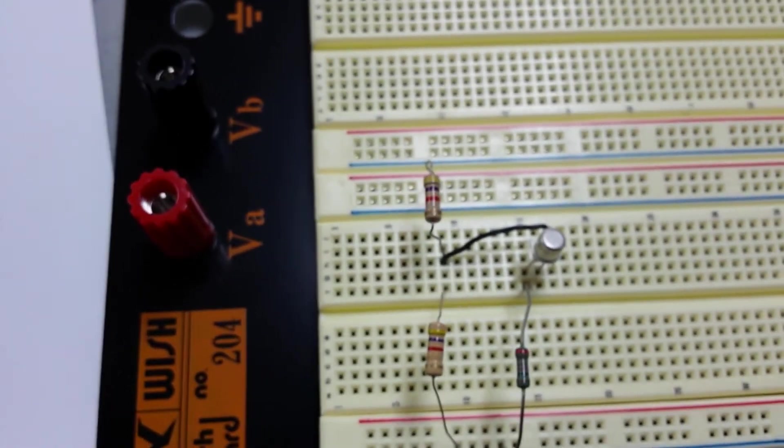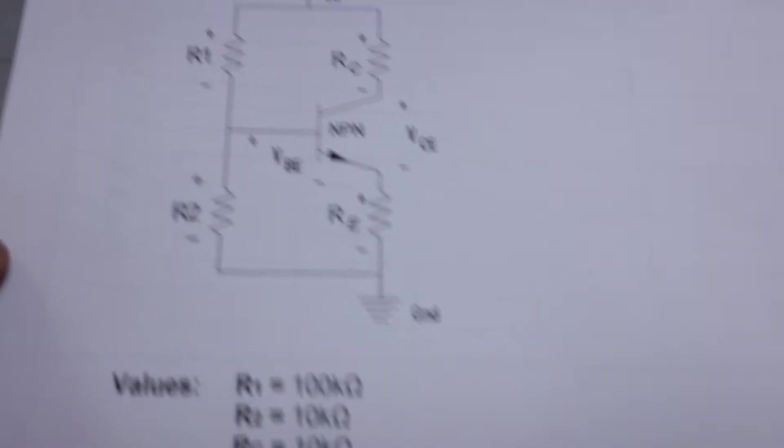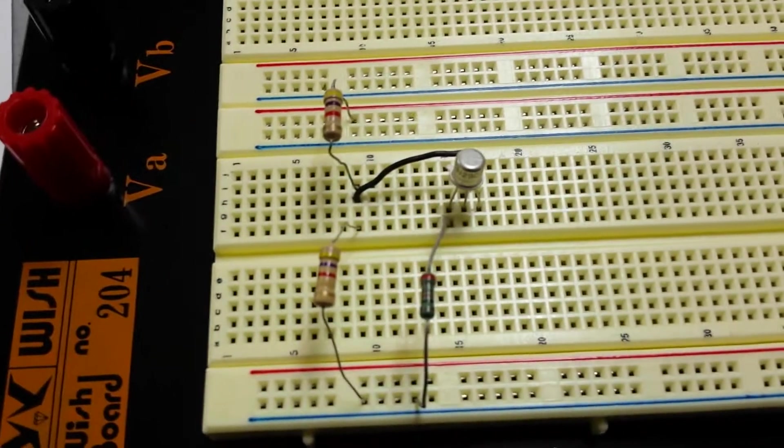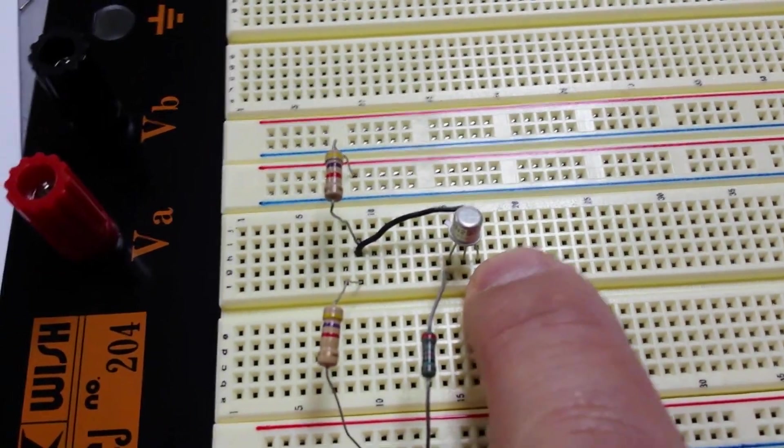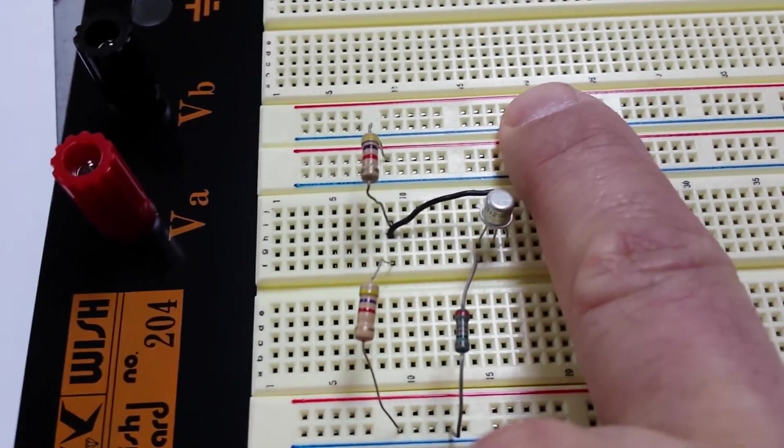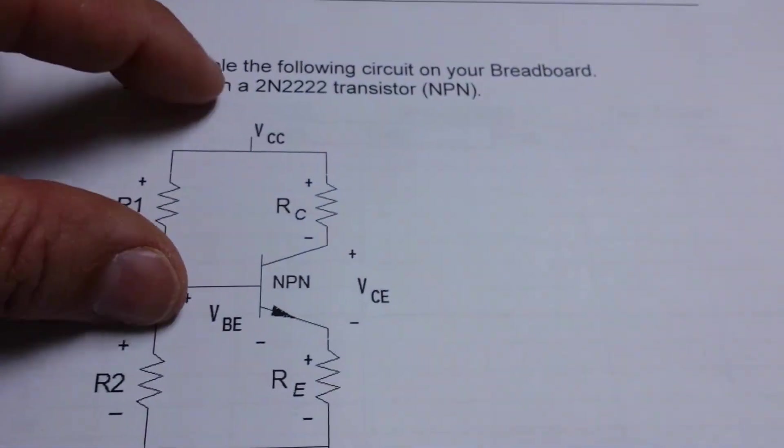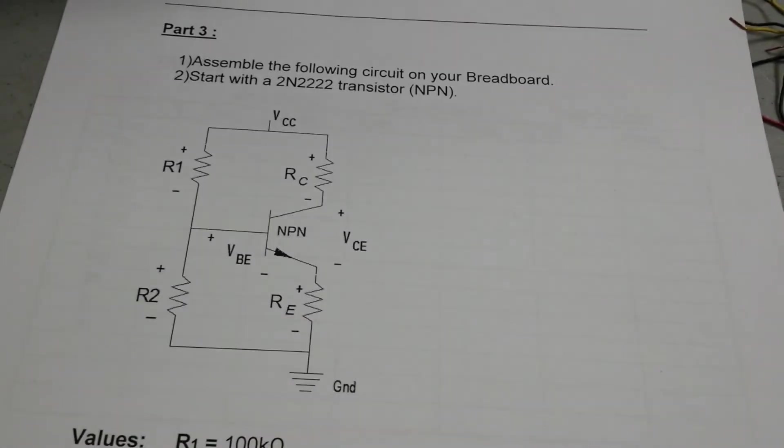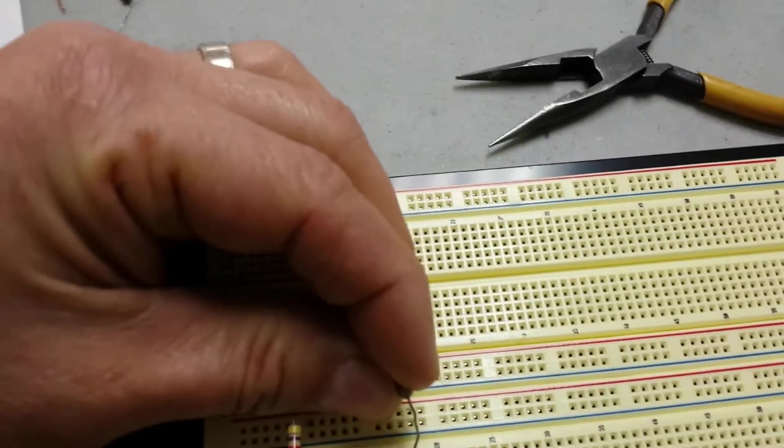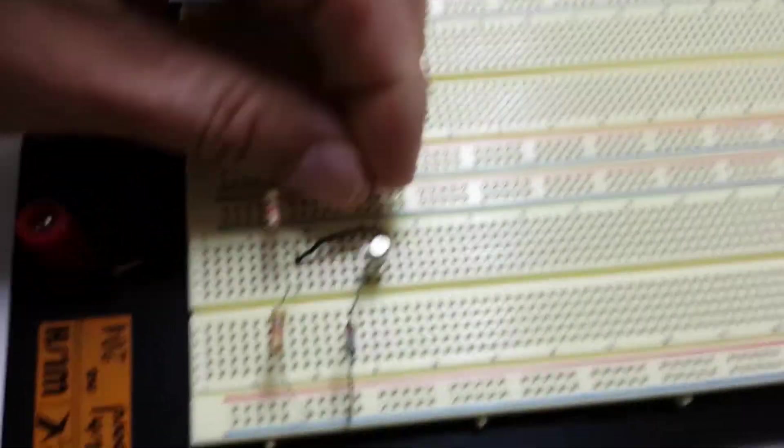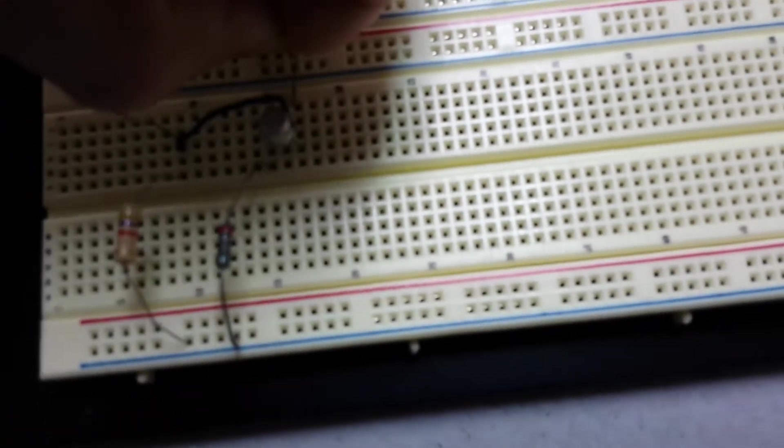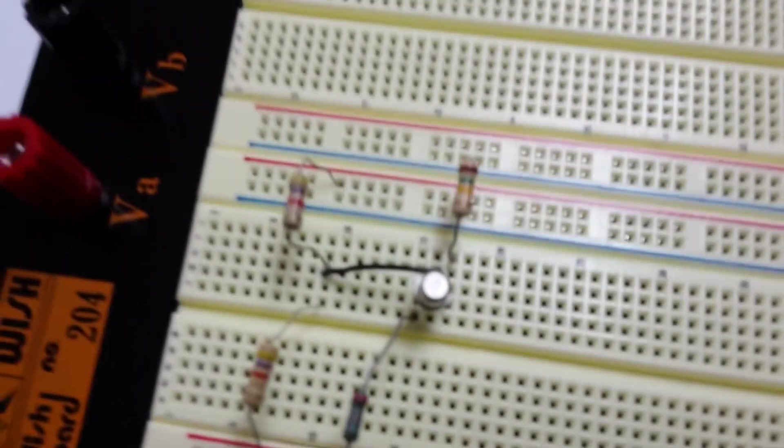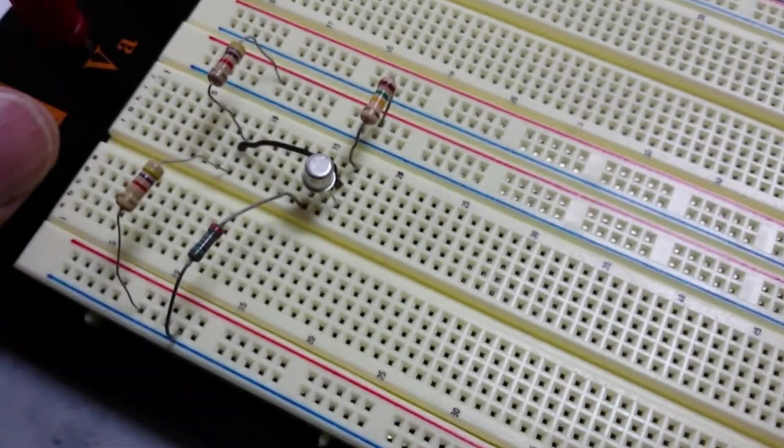The only resistor we're missing right now is the RC. So the RC is right here on the upper right-hand side. It'll go to the collector. The collector, as we've said, is the pin right here, but the resistor's going to have to go on top because it's running parallel to our R1. So we'll take the other resistor, we'll put it on our positive, and then we'll put it in to join the collector. There we go.